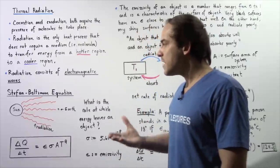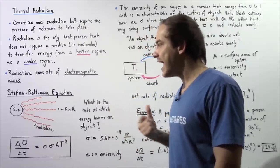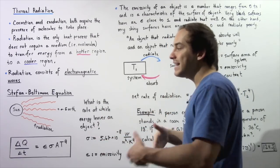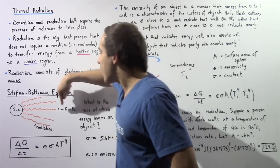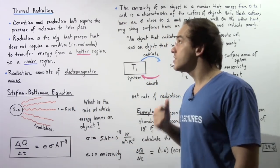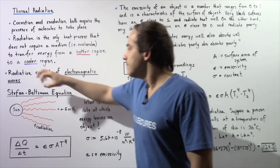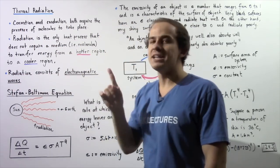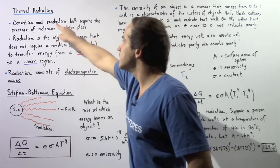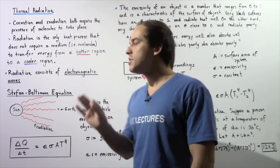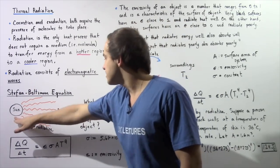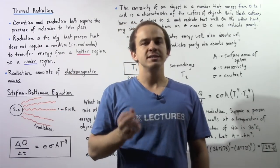A very common example of an object that radiates energy is the sun. The sun and the earth are separated by empty space — essentially a vacuum that does not consist of any molecules. This means convection and conduction between the sun and the earth cannot take place: the sun and earth are not physically touching, so conduction is ruled out, and the absence of matter between them means convection cannot occur either.